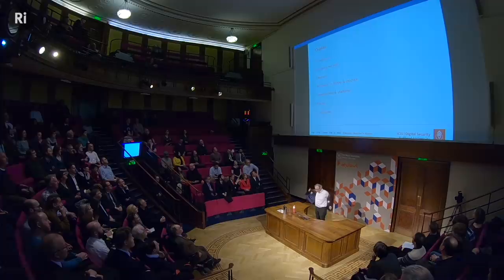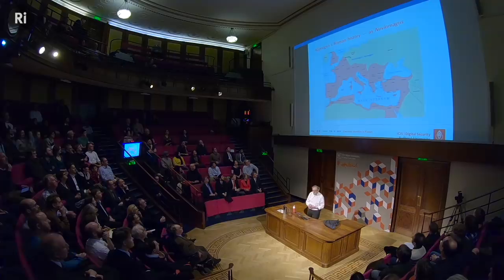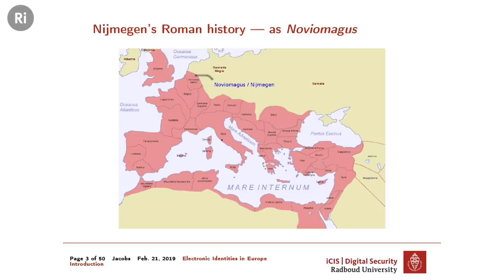I'll start with an introduction. I imagine that you maybe don't remember in detail where Nijmegen, the place I come from, is, so I brought a map. It's not a very recent map — it's a map from Roman times, from the year 100 roughly, when the Roman Empire was at the height of its power. You can see England and Wales in Roman hands, but also half of the Netherlands. At this border, the Romans founded a city which they called Novio Magus — the biggest city in that area, and actually the oldest city in the Netherlands — which later became Nijmegen.